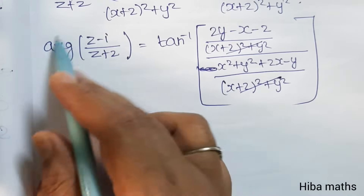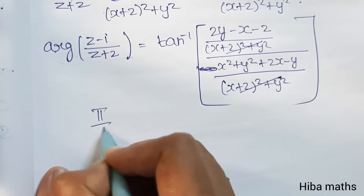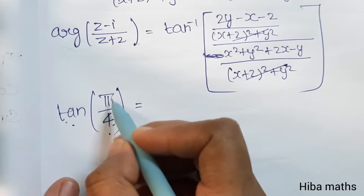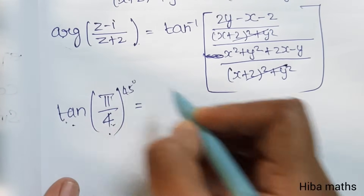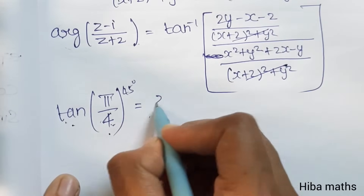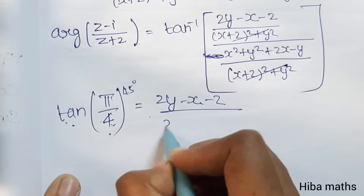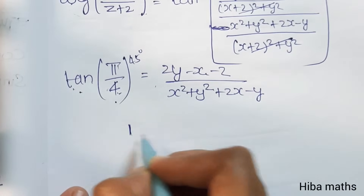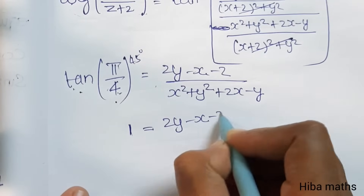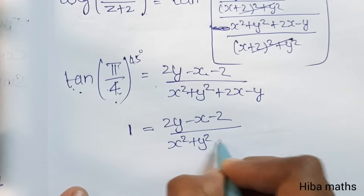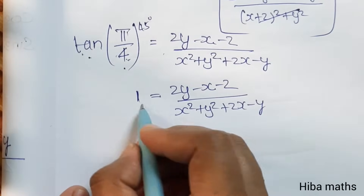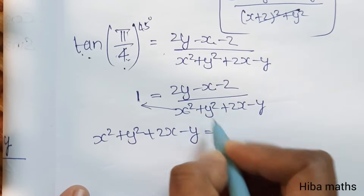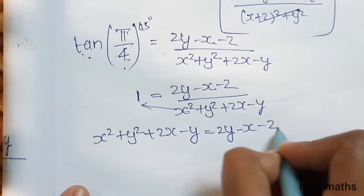So the full argument equals pi by 4. Taking tan on both sides: tan inverse equals pi by 4, and tan(pi by 4) equals tan(45 degrees) which equals 1. Therefore 1 equals (2y minus x minus 2) divided by (x square plus y square plus 2x minus y). Cross multiplying: x square plus y square plus 2x minus y equals 2y minus x minus 2.